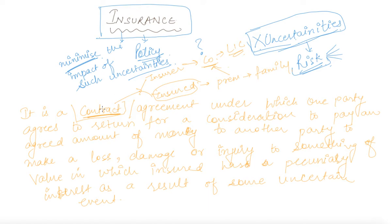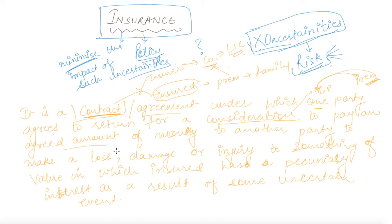Both parties are agreed to do something, that is why it is called a contract or agreement — under which one party agrees to return for a consideration. By consideration one means in return. If you are taking an insurance policy, then you are paying premium, so premium is that consideration amount. The insurer agrees to pay an agreed amount of money to the other party to make good a loss.